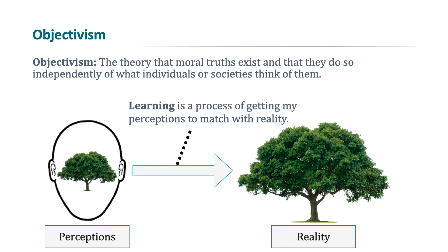Let's talk about the general concept of objectivism first. If we're trying to learn something about trees — trees are physical objects that exist outside — one basic common sense understanding of learning is a process where you get your perceptions of reality to match with reality. You observe them with your five senses, organize your thoughts, and get a perception of what a tree is. To the degree that your perceptions match the real world, that's to the degree that you learn anything. This is one common sense way of thinking about objectivism.